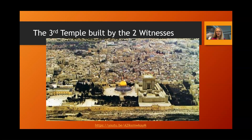Just as Israel, after the Babylonian exile, came back into the land with the primary goal of rebuilding the temple, now that Israel has returned from the ends of the earth to Jerusalem, they have an ultimate goal of rebuilding the temple — and this will be the third physical temple. This will very likely be built by the two witnesses, in the same way that Joshua and Zerubbabel — the two lampstands and the two olive trees as described in the book of Zechariah — had an integral part in rebuilding the second temple.